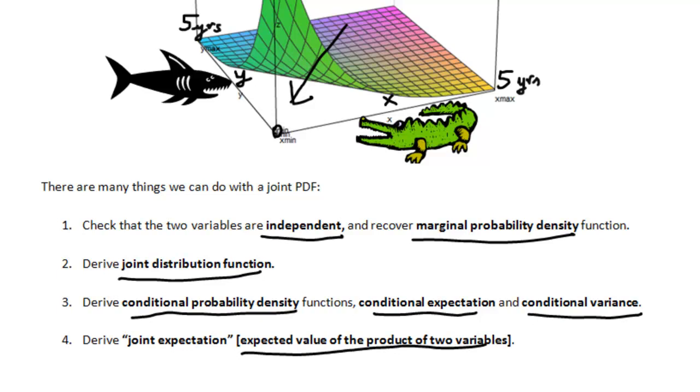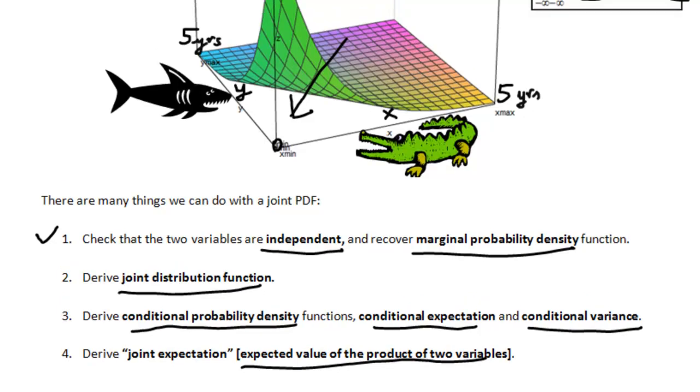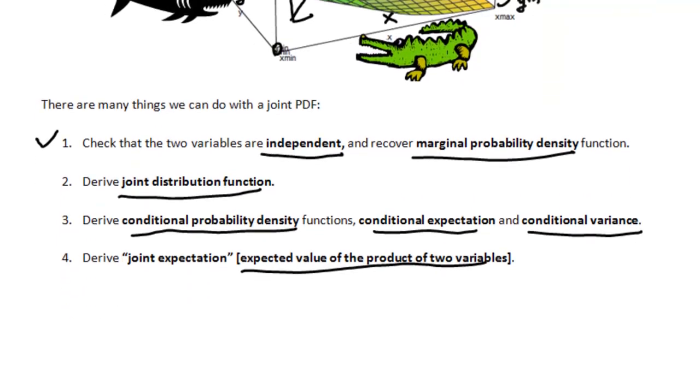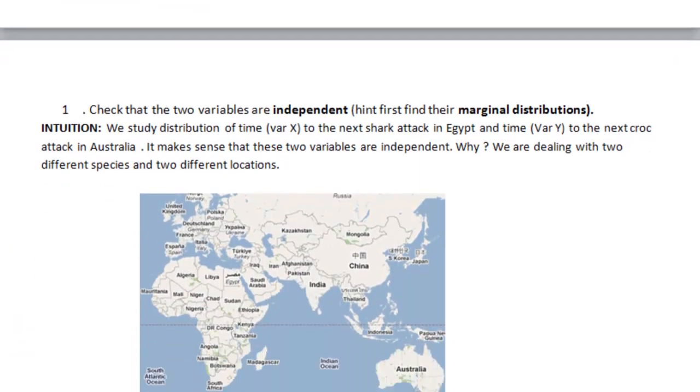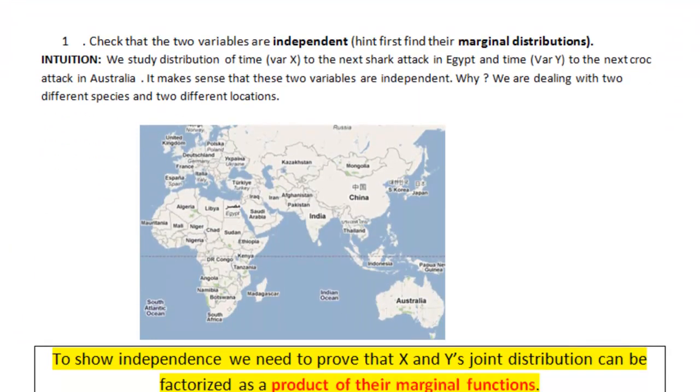Okay, let's start with the first one, which is how do we check that the two random variables are independent? But before we prove mathematically that these two variables are independent, let's think about intuition of what we are trying to achieve here.